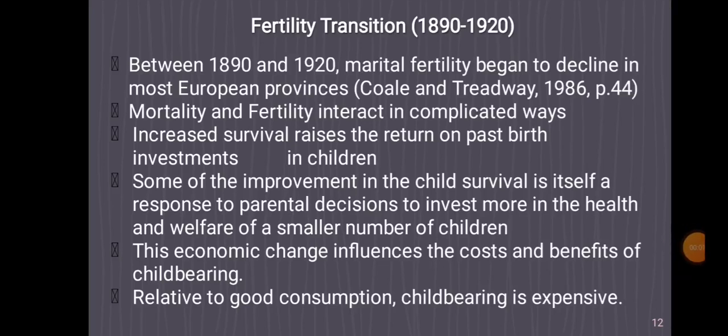Fertility Transition in 1890-1920: Between 1890 and 1920, marital fertility began to decline in most European provinces. Mortality and fertility interact in complicated ways. Increased survival reduces the return on past birth investments in children. Some of the improvement in child survival is itself a response to parental decisions to invest more in the health and welfare of a smaller number of children. This economic change influences the costs and benefits of childbearing.